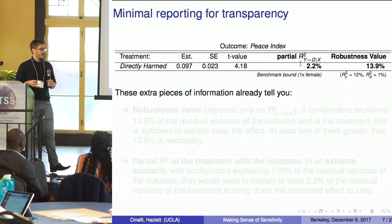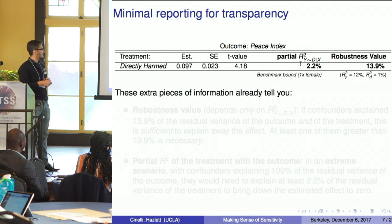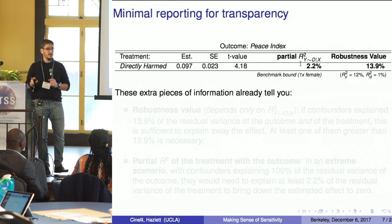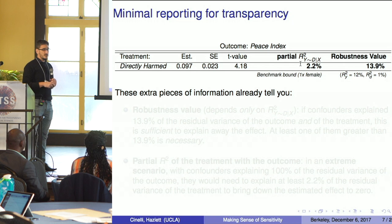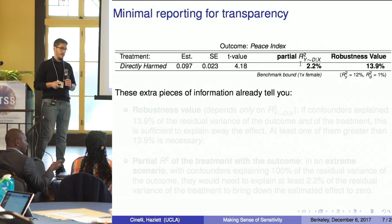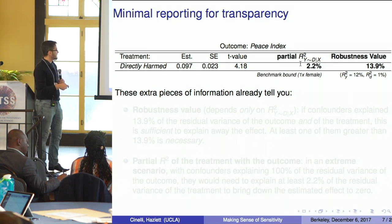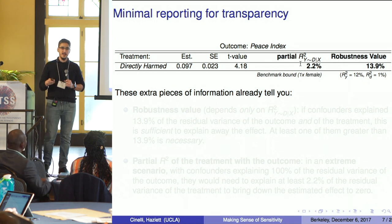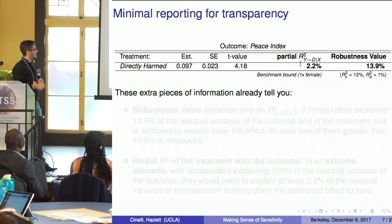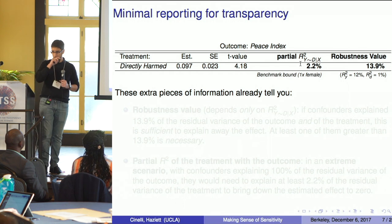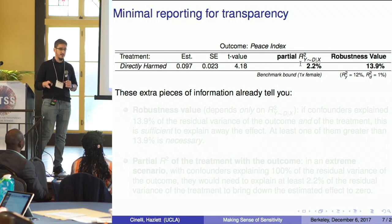It turns out everything you need is already in the table — you just need to know where to look. This is our proposal for minimal reporting for transparency of the sensitivity of your results. I replicate the estimate, standard errors, and t-values, and I only ask you to compute two more things. The first is the partial R-squared of the treatment with the outcome — how much of the residual variance your treatment explains after accounting for covariates. The second is what we call the robustness value.